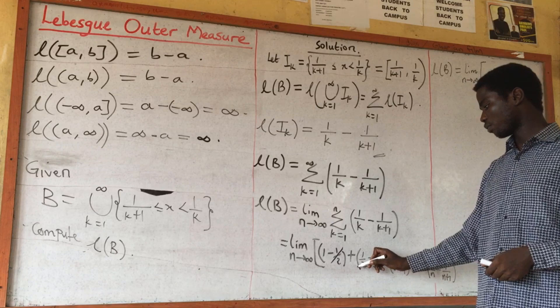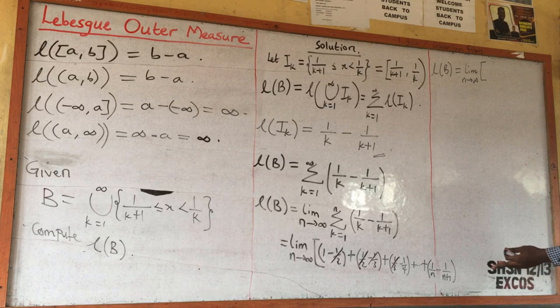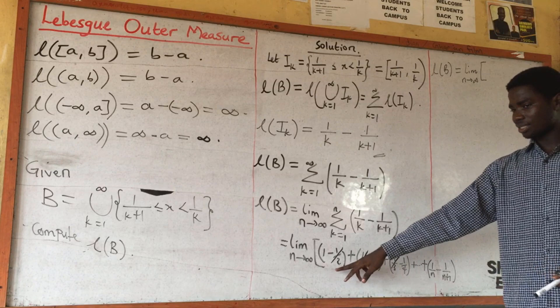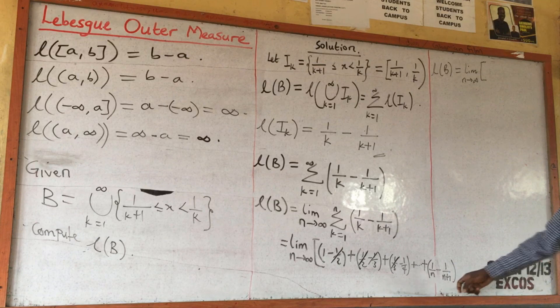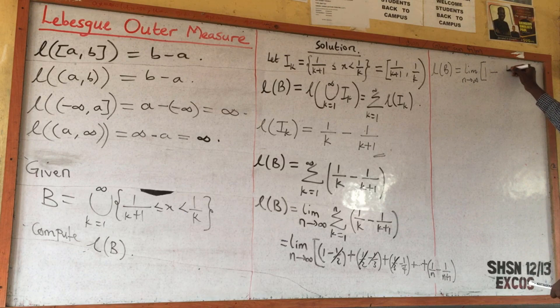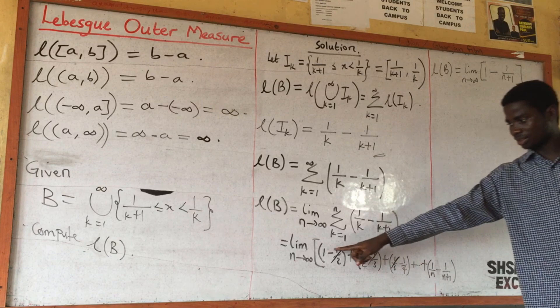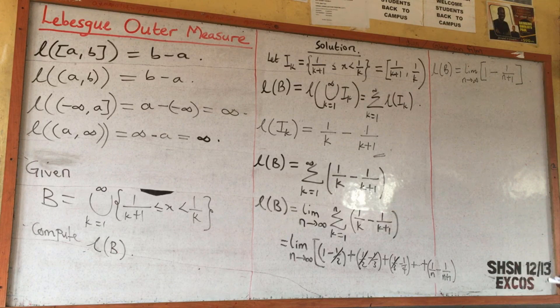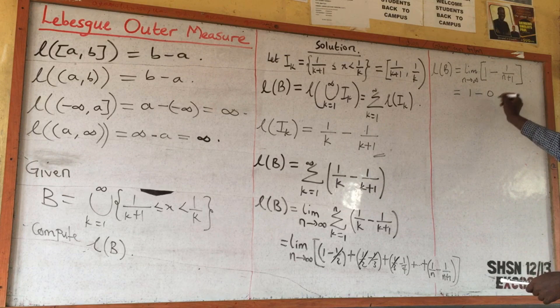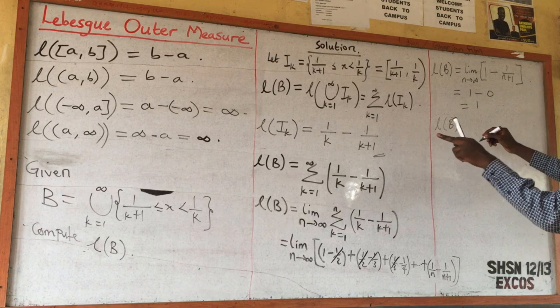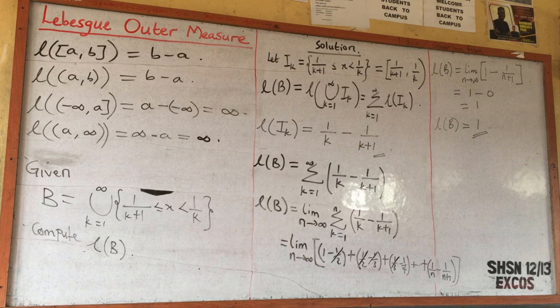It's telescoping because −1/2 cancels 1/2, −1/3 cancels 1/3, and so on. After the telescoping, you are left with 1 and −1/(n+1). Taking the limit as n tends to infinity, 1/(n+1) becomes 0. So the length of B equals 1.